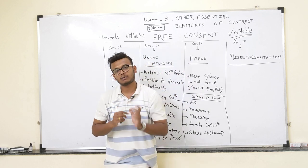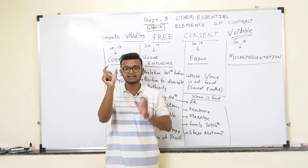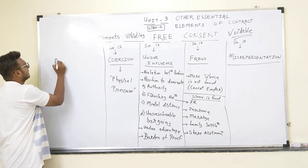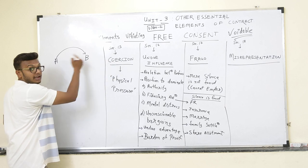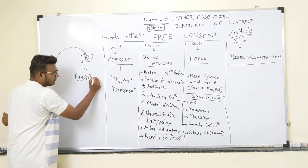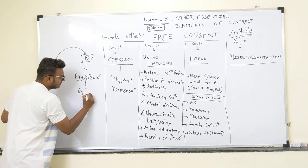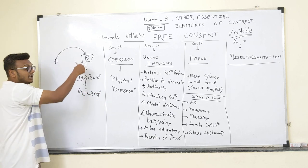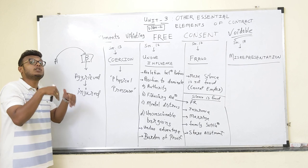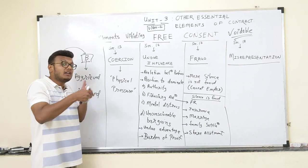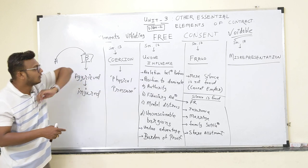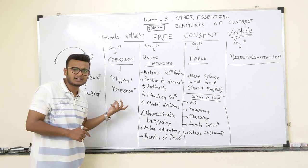A voidable contract means one party is the aggrieved party. For example, if A commits coercion against B, then B is known as the aggrieved party — also called the injured party. B will get two rights: one, to cancel the contract; and two, to continue the contract and keep the benefit of it.